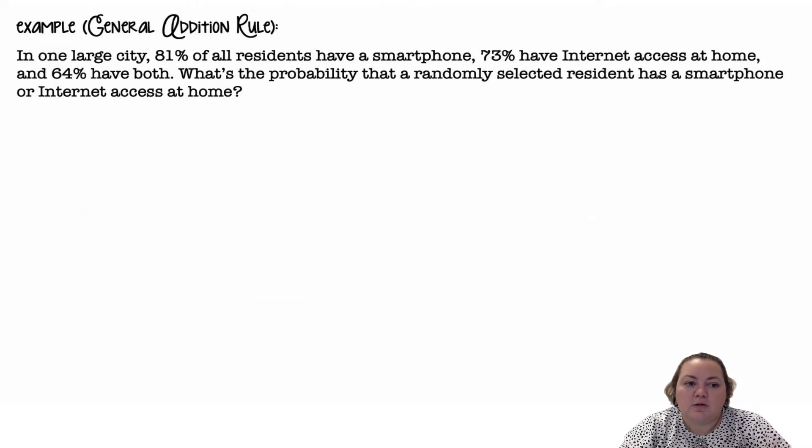The general addition rule. In one large city, 81% of all residents have a smartphone, 73% have internet access at home, and 64% have both.